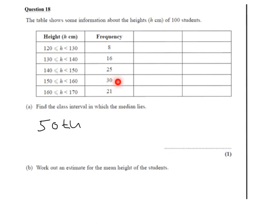It'll actually be the first of the next 30, and so it's in the interval h is greater than or equal to 150 less than 160. So we'd simply need to write that to get the answer. The answer is 150 ≤ h < 160.